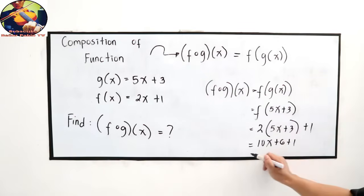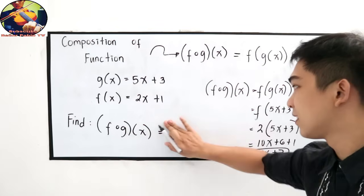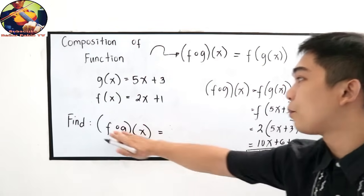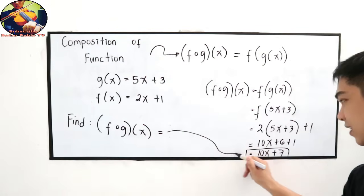So final answer: 10x plus 6 plus 1 is 7. So this is now the value of our f composed of g of x.